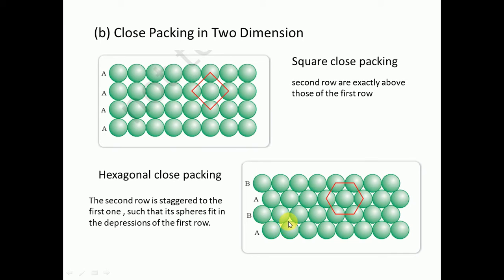For hexagonal close packing, we fit the second row B into the depressions of the first row. When we fit the third row in the same AB-type arrangement, if we count the coordination number we get 1, 2, 3, 4, 5, 6 neighboring atoms. The shape formed by joining the centers of these neighboring atoms is a hexagon, giving us hexagonal close packing.